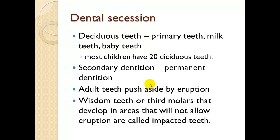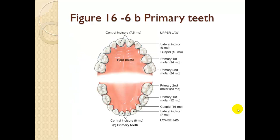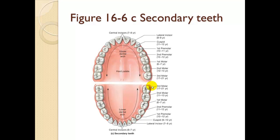Deciduous teeth — also called primary, milk, or baby teeth. Most children have about 20 deciduous teeth. Secondary dentition — permanent teeth — erupt from underneath and push out the baby teeth in their place. Wisdom teeth, or third molars, that develop in areas where they cannot erupt are called impacted teeth. So primary teeth number about 20, and the secondary teeth push these out. The tooth types are Incisors, Cuspids, Bicuspids (premolars), and Molars — ICBMs.